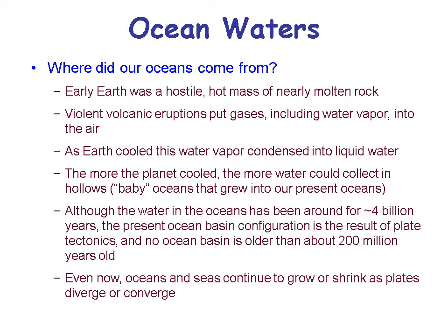Where did our oceans come from? The early Earth was a hostile mass of molten rock. Volcanic eruptions put gases, including water vapor, into the air in the very early Earth. As the Earth cooled, this water vapor condensed into liquid water — thousands of years of rain as the Earth began to cool. That water collected into the hollows of the Earth, which grew into our present oceans, taking a form similar to what we have now soon after the Earth was first created, about 4 billion years ago.